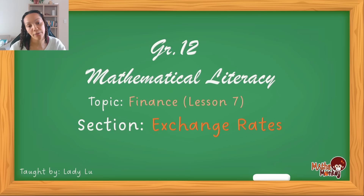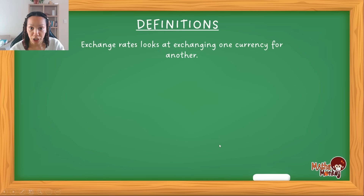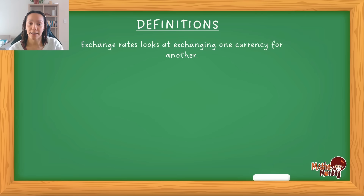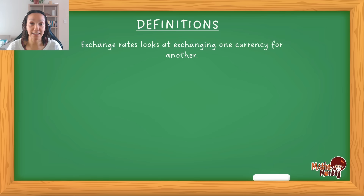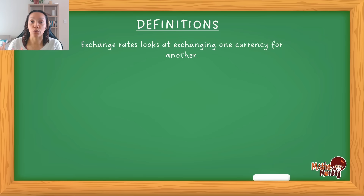Lesson seven: exchange rates. Exchange rates looks at exchanging one currency for another. In every country, they have a currency at which they do their financial transactions. In South Africa, we use the South African Rand; in America, they use the American Dollar and so forth. If you take your money and go over to America, you're not able to make purchases with a South African Rand in the US. So exchange rates means exchanging your Rand and buying dollars to use in that specific country where that currency is relevant.